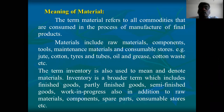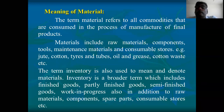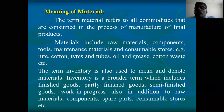Material may be jute, cotton, tire, tube, oil, grease, cotton waste, etc. To get a finished product from the process of production, whatever commodities you consume or use, that is called material. That may be direct material or indirect material.